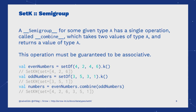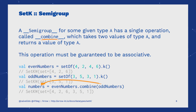A Semigroup is a type with an associative operation, which we will be calling combine. Here, we are combining two sets, which in our case is performed as a concatenation of the content of each structure.